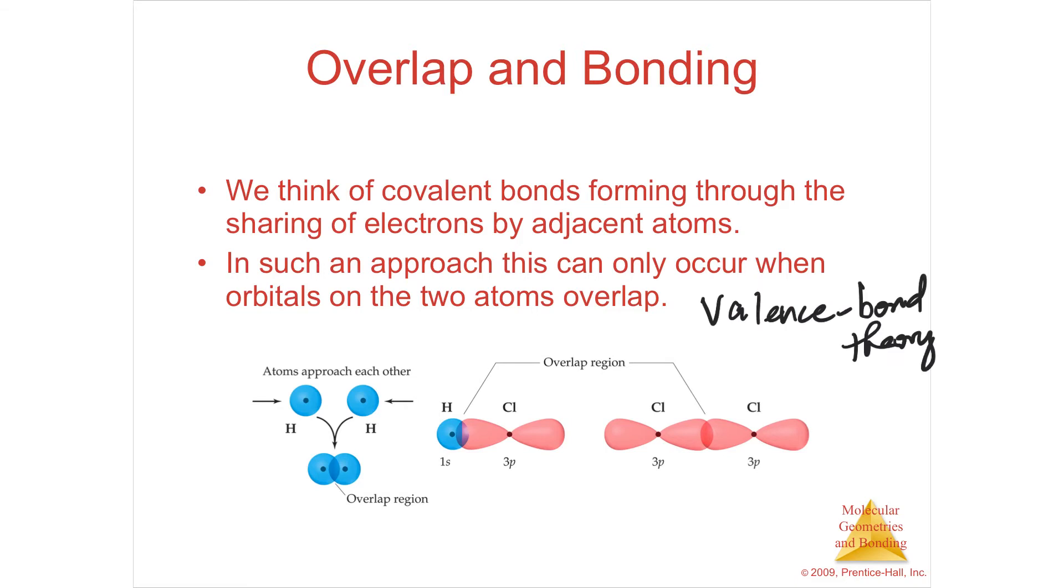This is called valence bond theory. The valence bond theory states that the covalent bond forms when the orbitals of the two atoms overlap, and there's a shared region of space between the orbitals, and that's called the orbital overlap, and that the two electrons, usually one from each atom of opposite spin, overlap in this space.